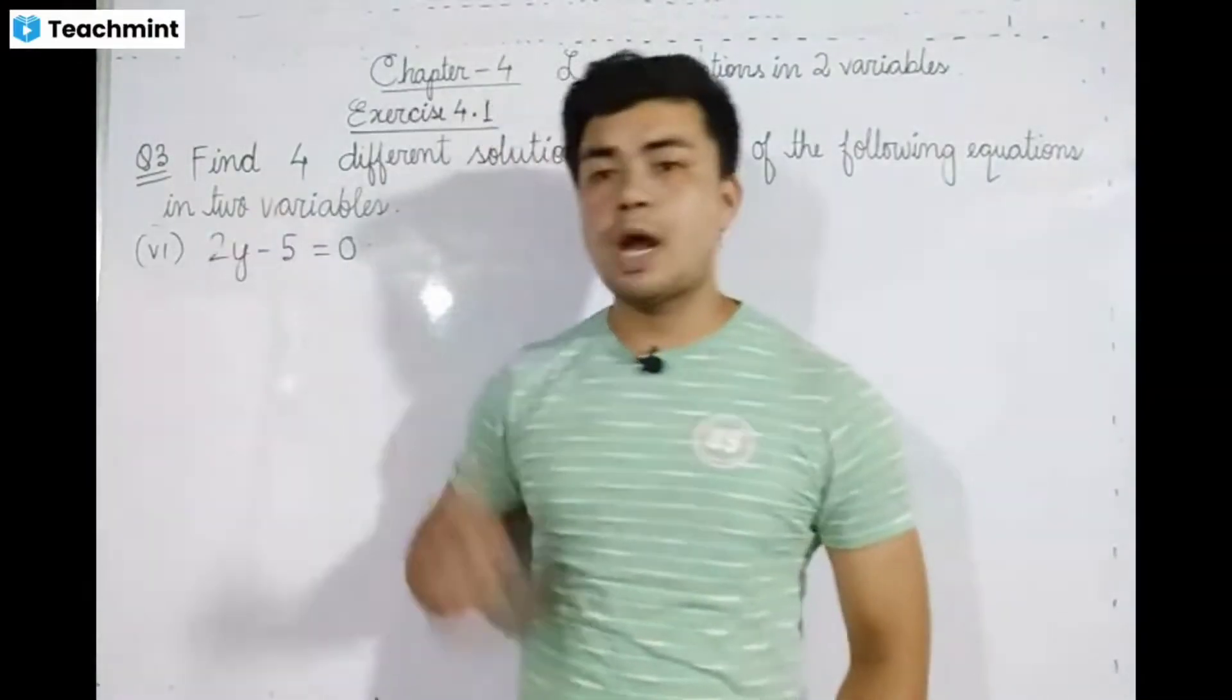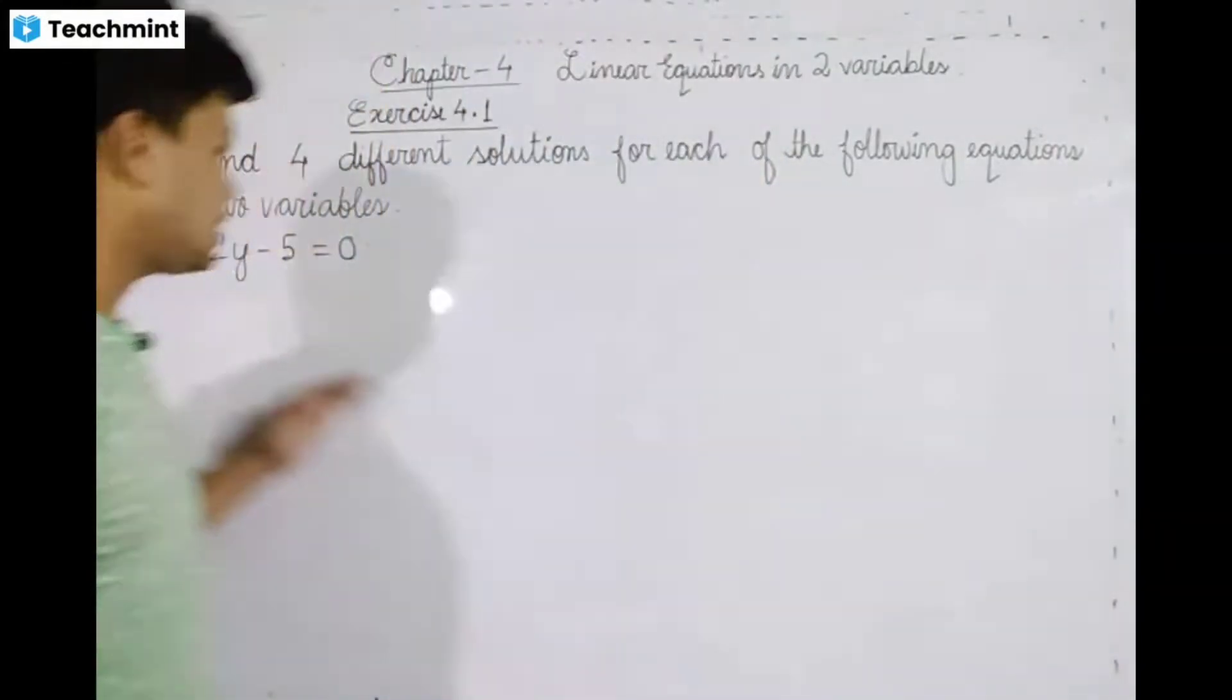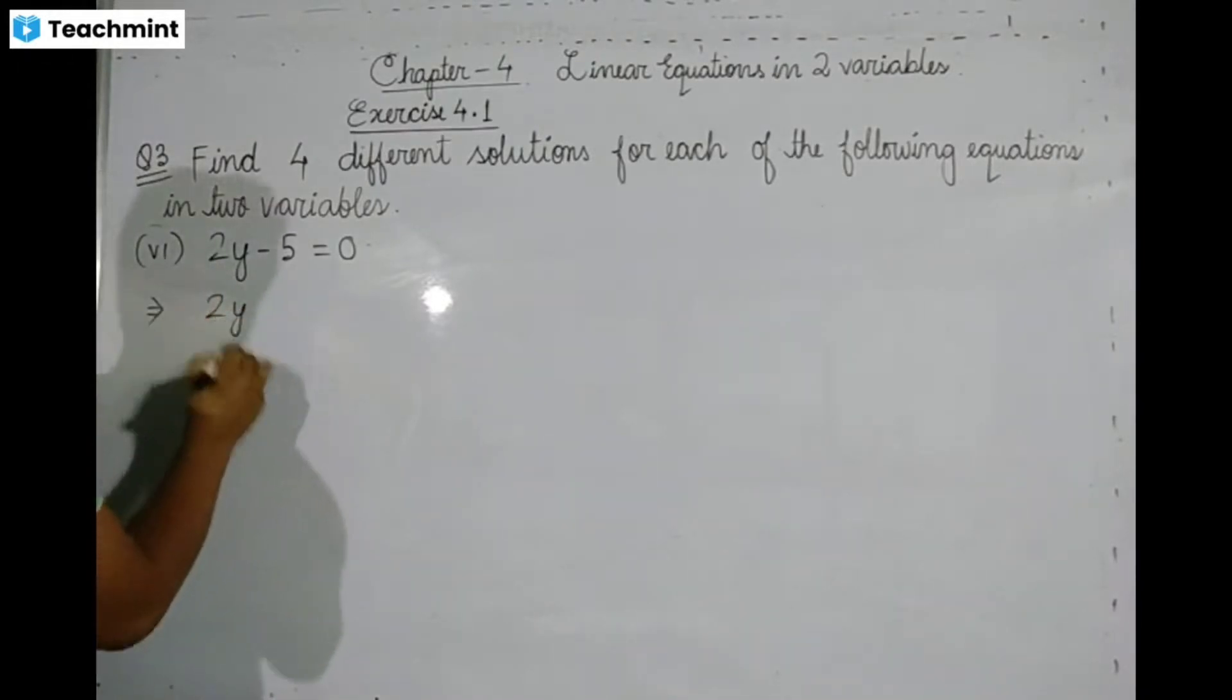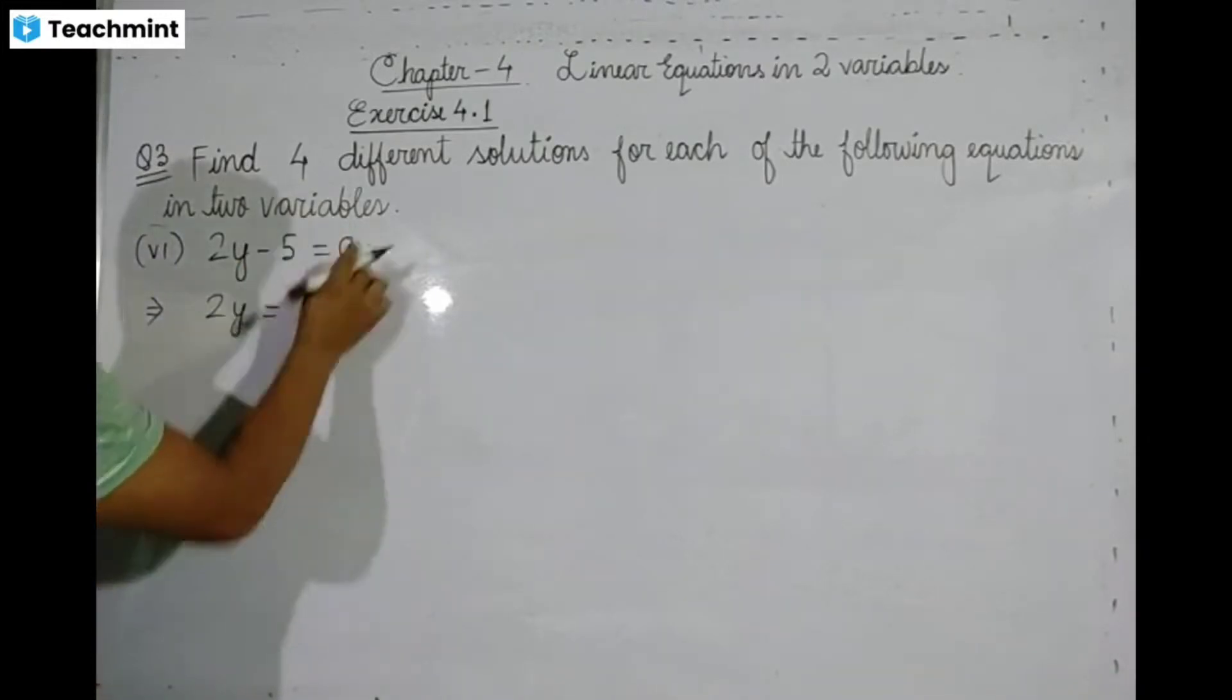Question number six, the equation: twice y minus five is equal to zero. You can see, y minus five equals zero, we need to solve for y.